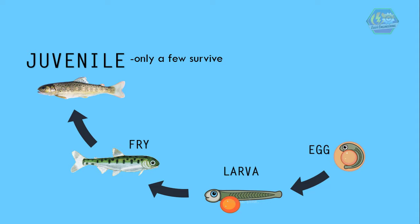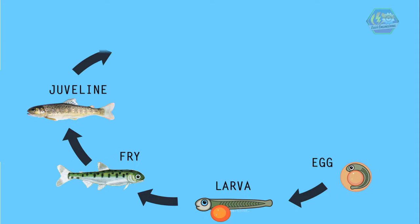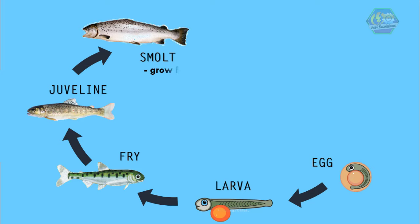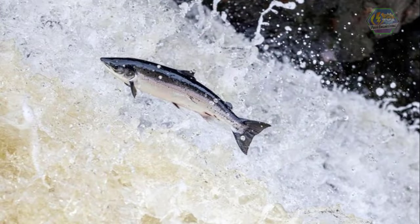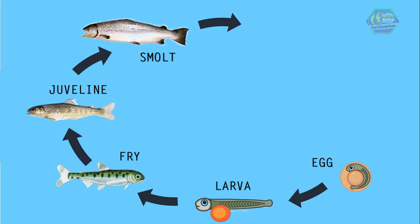Next is the smolt stage. Fishes grow fast in this stage. Some smolts stay in brackish water, like the trout and the salmon.